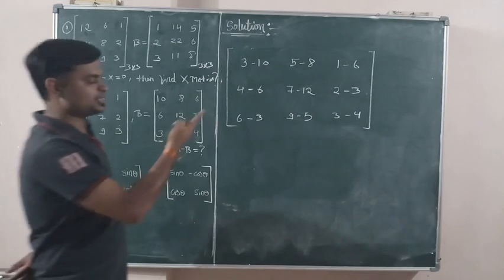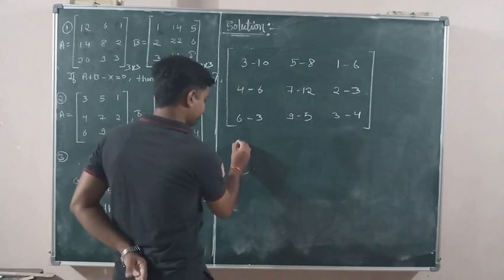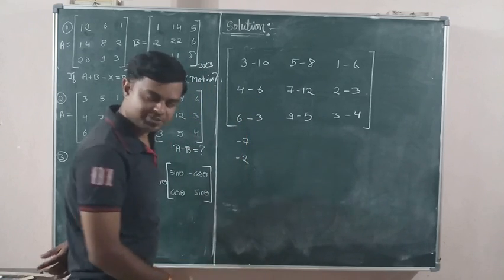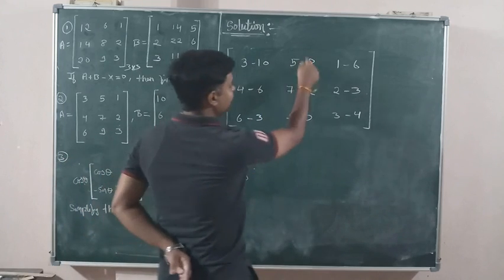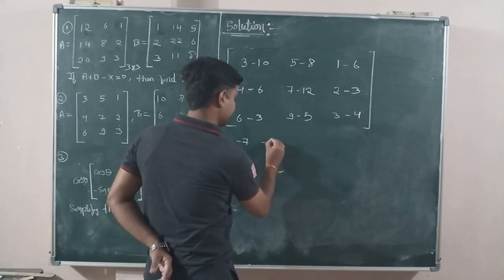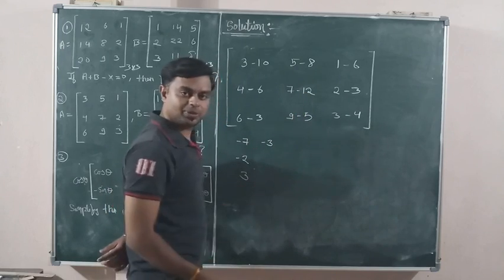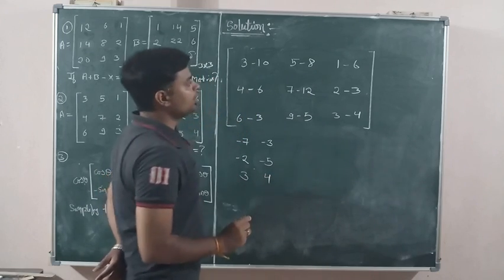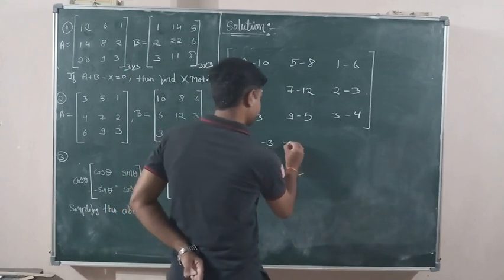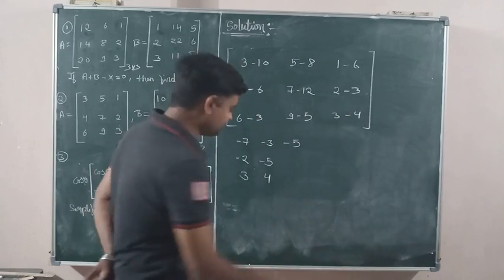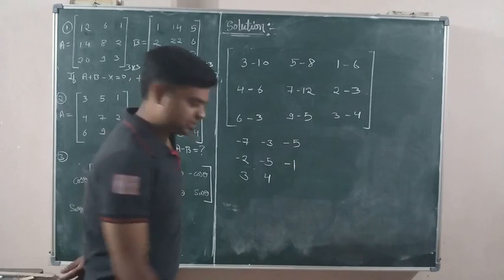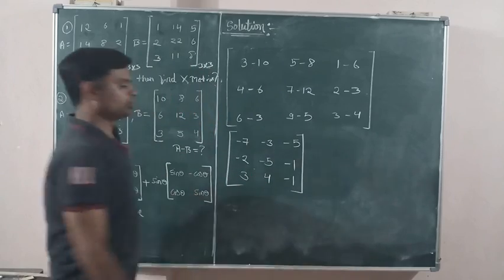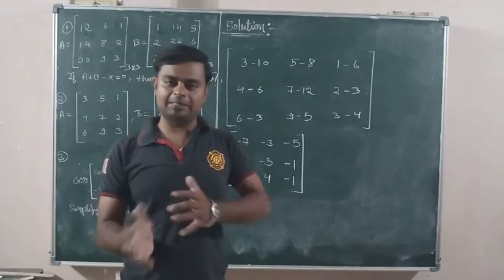This is our A minus B matrix. 3 minus 10 equals minus 7. 4 minus 6 equals minus 2. 6 minus 3 equals plus 3. 5 minus 8 equals minus 3. 7 minus 12 equals minus 5. 9 minus 5 equals 4. 1 minus 6 equals minus 5. 2 minus 3 equals minus 1. 3 minus 4 equals minus 1. This is the answer for the difference of matrix A and matrix B.